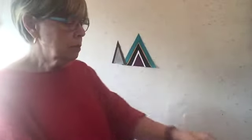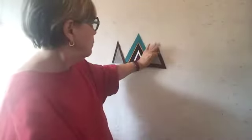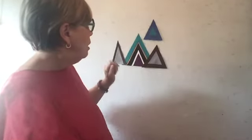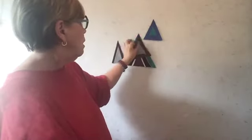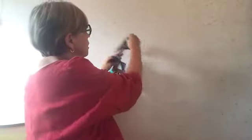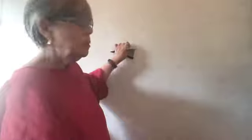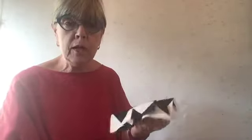Another thing to think about with triangles: they read as mountains, or they can read as trees, depending on how you arrange them. Turn them in this direction, put them on a post, and they are a flag or pennant pretty much every time. If you put one on a skinny line going out this way, of course it's an arrow. A lot of people make beautiful arrows and use them intentionally, but just know that's what you're making.